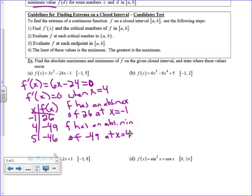So what we've done is take the derivative and set it equal to 0 to find critical points, because relative extrema can only occur at critical points. But we also have to check the endpoints. These are the only possible locations for max and mins — the endpoints, or where the graph turns around and has a zero or undefined derivative.